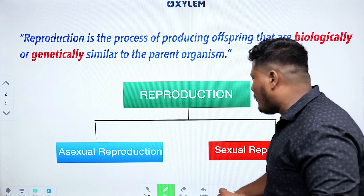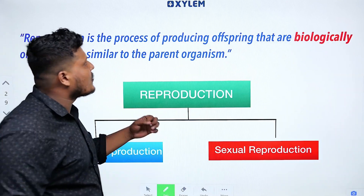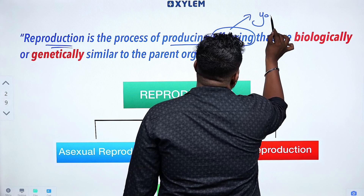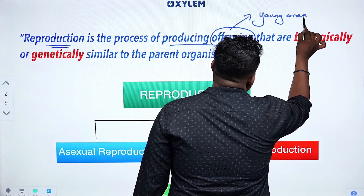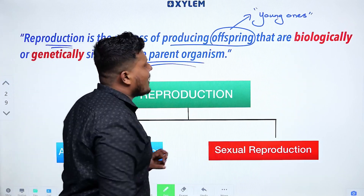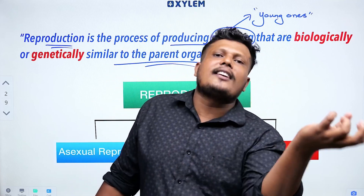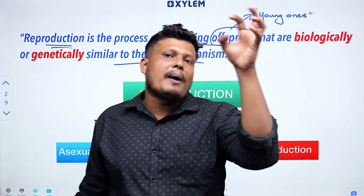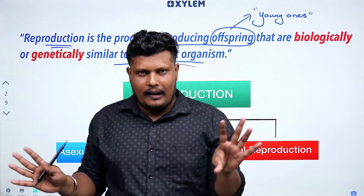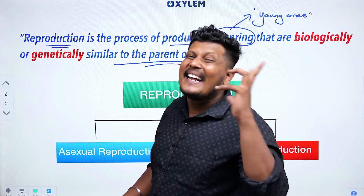Reproduction — what is that? Let's understand and then move to asexual reproduction. Reproduction is a process of producing offspring. Offspring means young ones. Young ones are produced that are biologically and genetically similar to the parent organism. Dog produces dog, cat produces cat — a cat produces a kitten, a dog produces a puppy. A cat will not produce a dog.